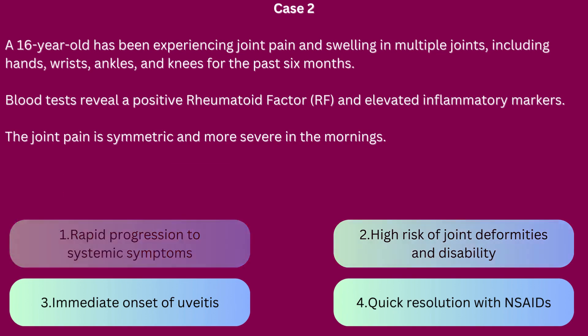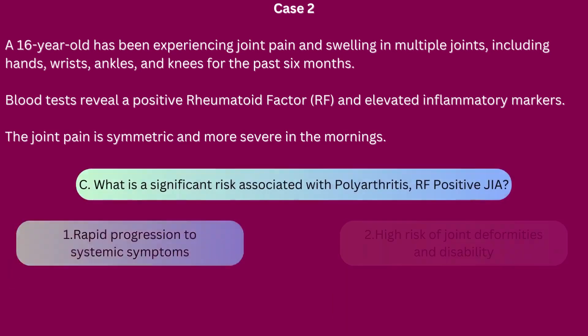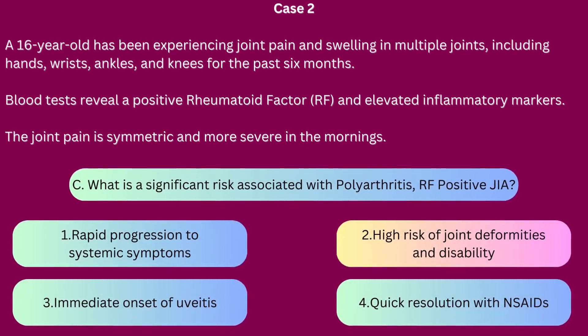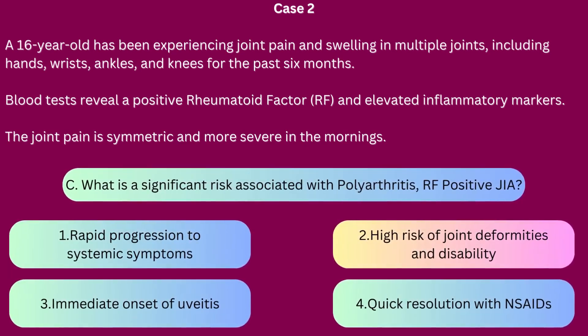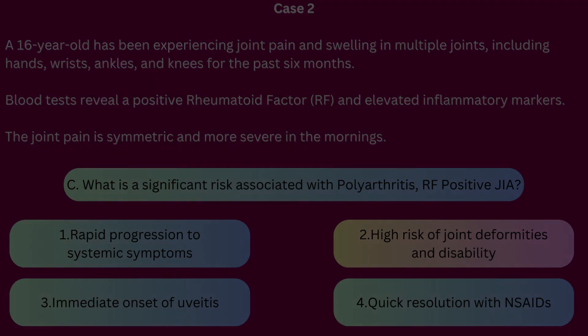The correct answer is 2: joint deformities and long-term disability if not treated aggressively. Early and aggressive treatment, including disease-modifying anti-rheumatoid drugs and biologics, is crucial in preventing this outcome.